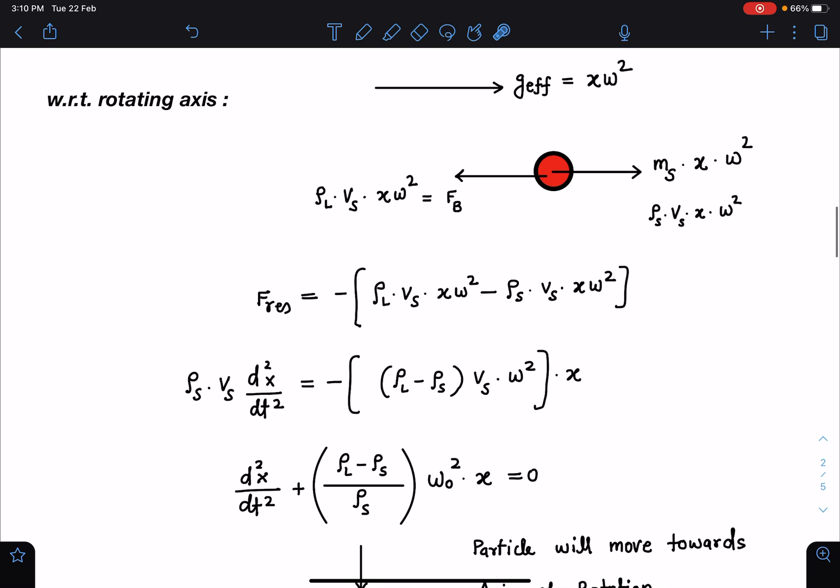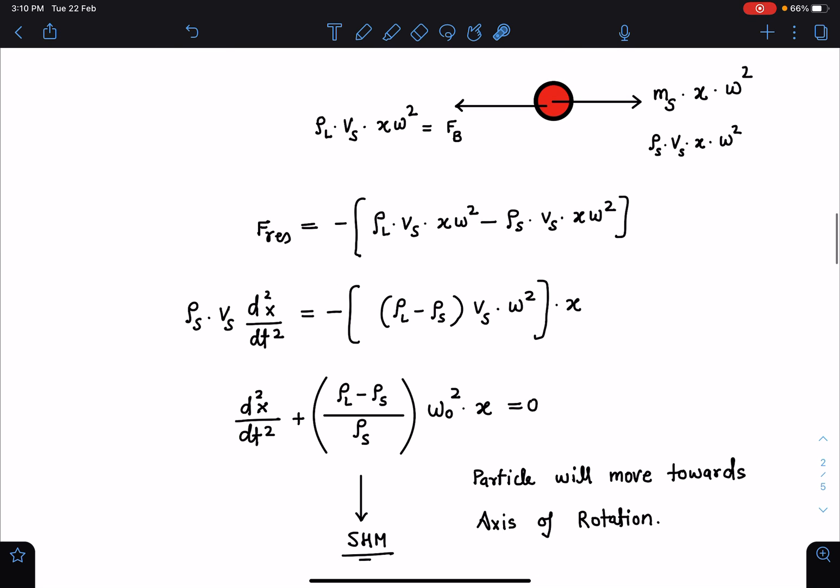Particle will be moving towards the axis because rho liquid is given more than rho solid. After this, here we can say f restoring equals mass into acceleration, so this is the mass of solid and acceleration I can write as d2x by dt square. So this equation will reduce to a standard equation of SHM, so here comes the answer of the first part. We have analyzed the motion and we have the idea how this particle is going to move. Effective omega we can say here, the omega of SHM is nothing but root of rho l minus rho s by rho s times omega 0.